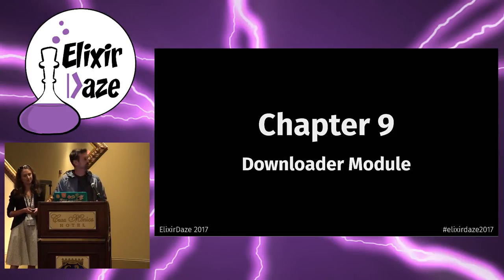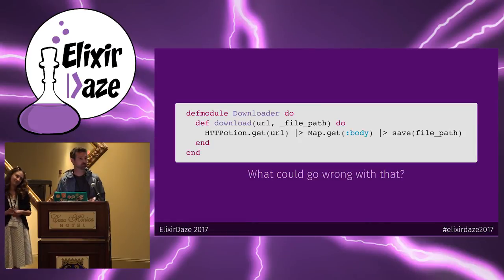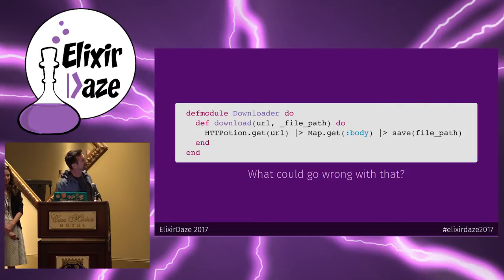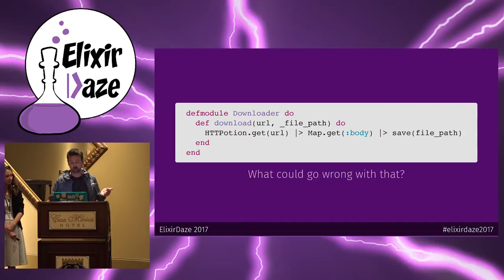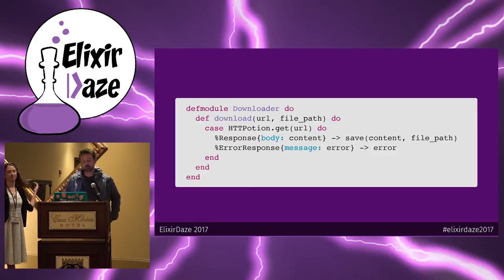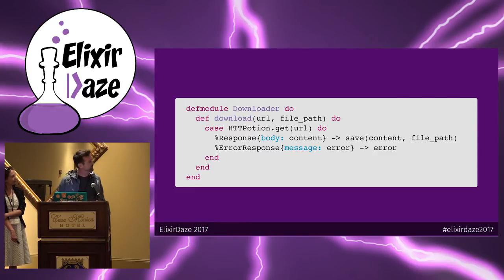Let's take a look at the downloader module. Really all we needed to do was download a file from a URL from Google Spreadsheet and then save that to a location on the file system. It doesn't seem that complicated. We're using HTTPotion to get the URL, and then we're going to get the body out of that. But if we're given an invalid URL, that Map.get is just going to return nil, and we'll end up saving nil to a file, which is no use to anyone.